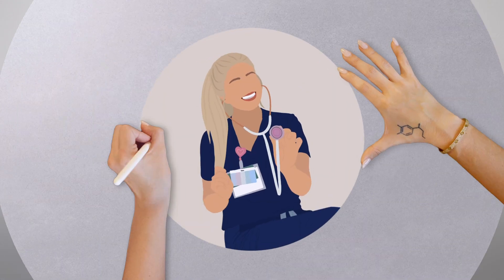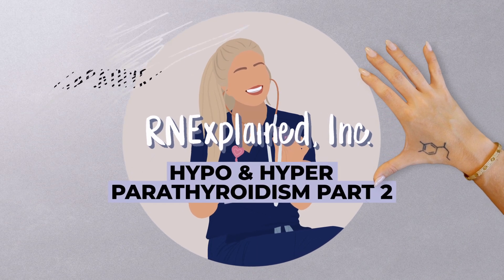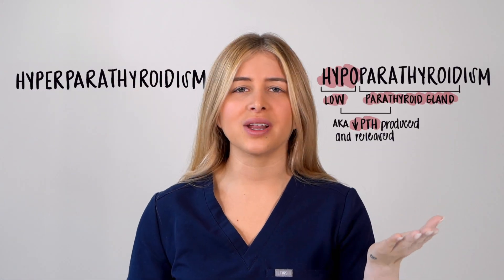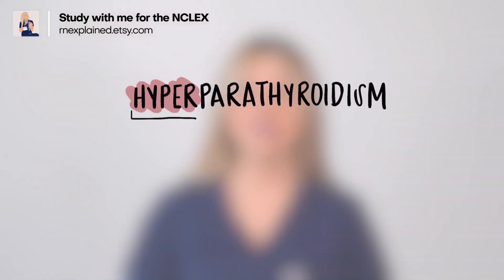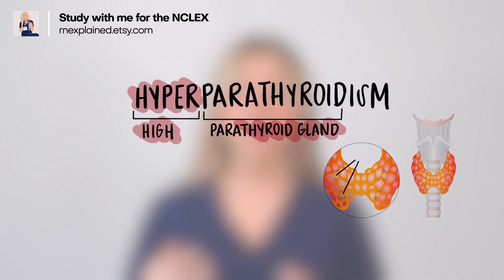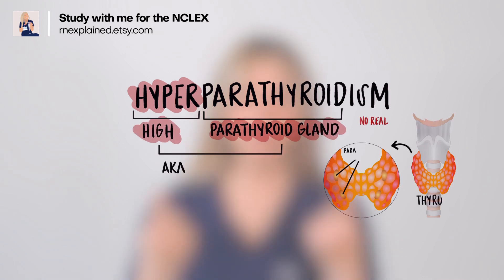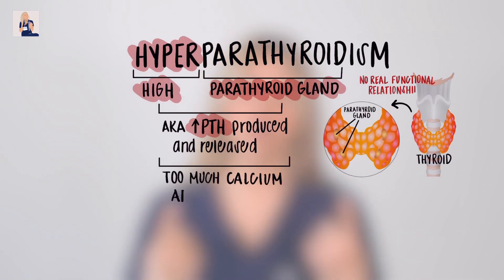Welcome back. Now let's dig into hyperparathyroidism. Like I always say, once you know one extreme, learning the opposite is going to be way easier. Hyperparathyroidism is the overactivity of the parathyroid gland, causing too much PTH to be released and too much calcium absorbed in the blood.